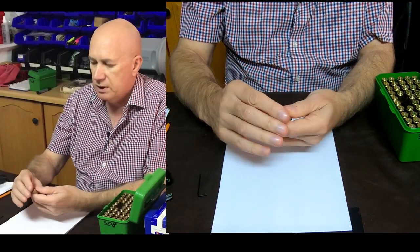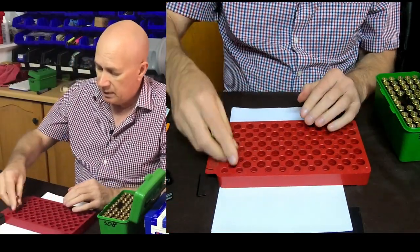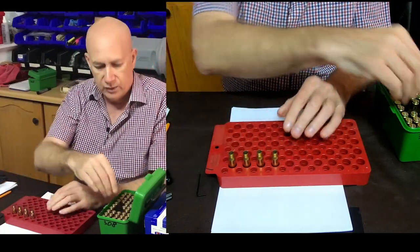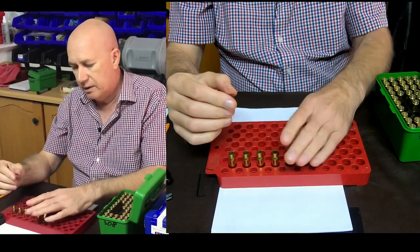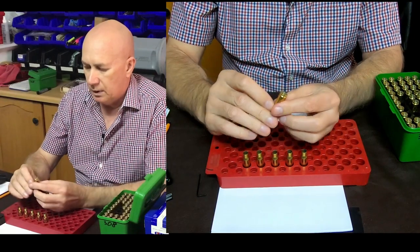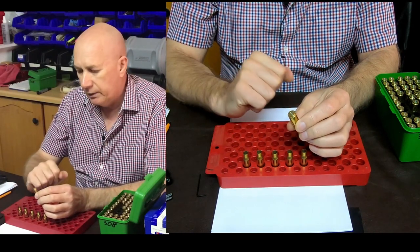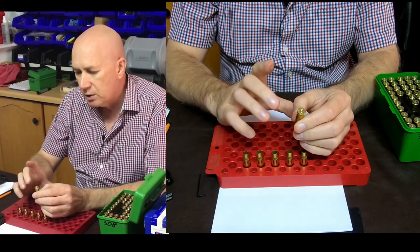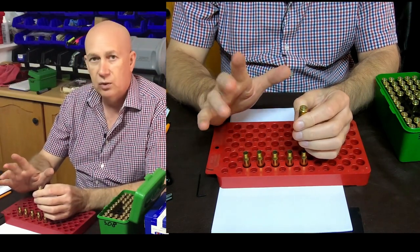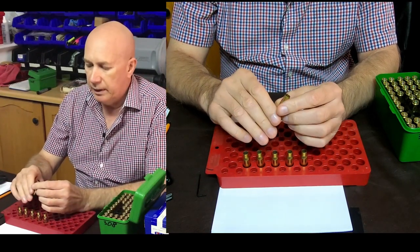But the first process that you do once you've got your brass that you want to reload is you'll get your tray ready again and just put your brass in there, as many as you want or the full tray. Now the first step that you do from here on is you get the primer out.